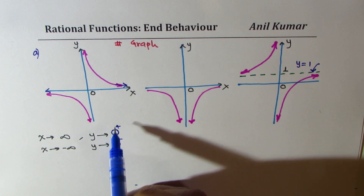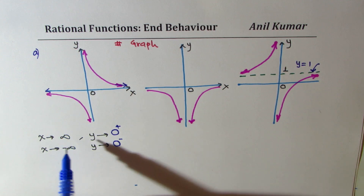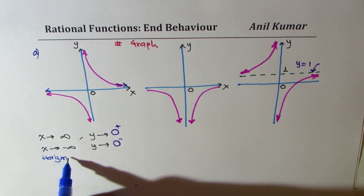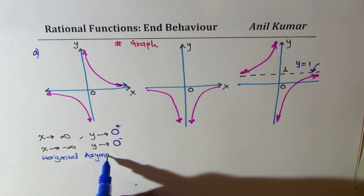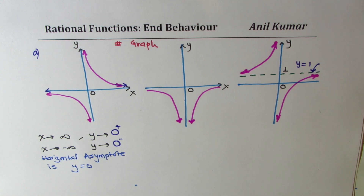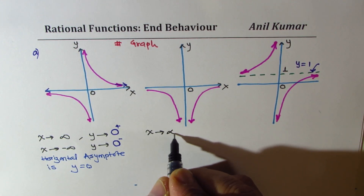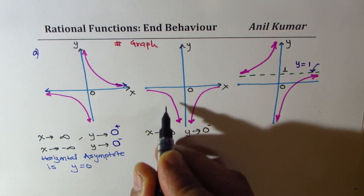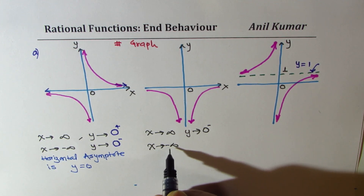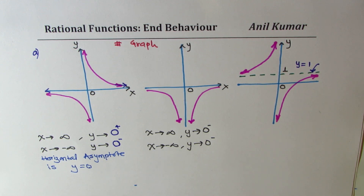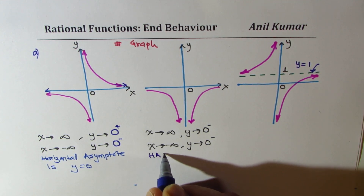So in Graph A, the function approaches 0 from above on the right and from below on the left. Since we are approaching a particular value, we say the horizontal asymptote is y = 0. For the next function, Graph B, when X approaches positive infinity the Y value approaches 0 from below (negative), and when X approaches negative infinity Y also approaches 0 from below.